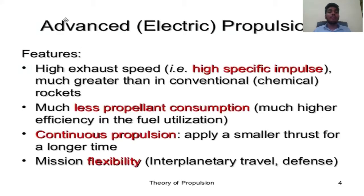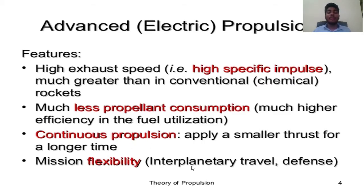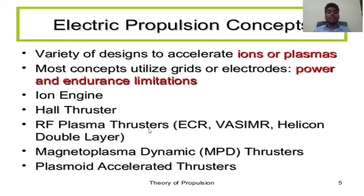Advanced electric propulsion features: high ejective velocity, high specific impulse — much greater than in conventional chemical rockets — much lesser propellant consumption, much higher efficiency in fuel utilization. Continuous propulsion: apply a smaller thrust for a longer time. Mission flexibility for interplanetary-level defense.